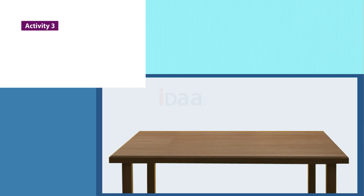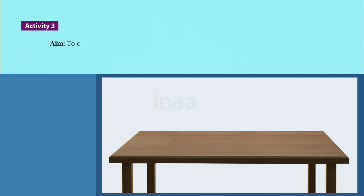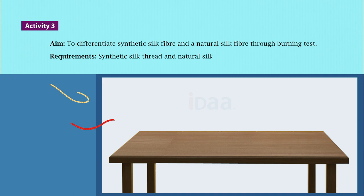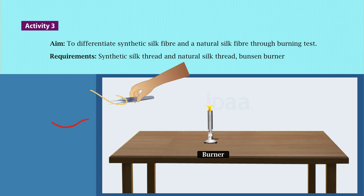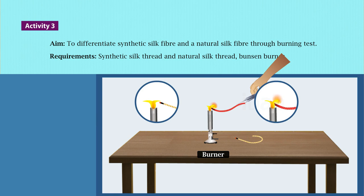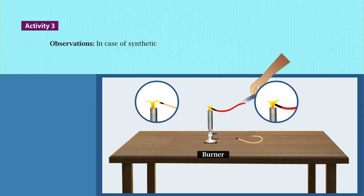Activity 3 — Aim: To differentiate synthetic silk fiber and a natural silk fiber through a burning test. Requirements: synthetic silk thread, natural silk thread, and a Bunsen burner. Procedure: Take the synthetic silk thread and burn it. Then take a natural silk thread and burn it.